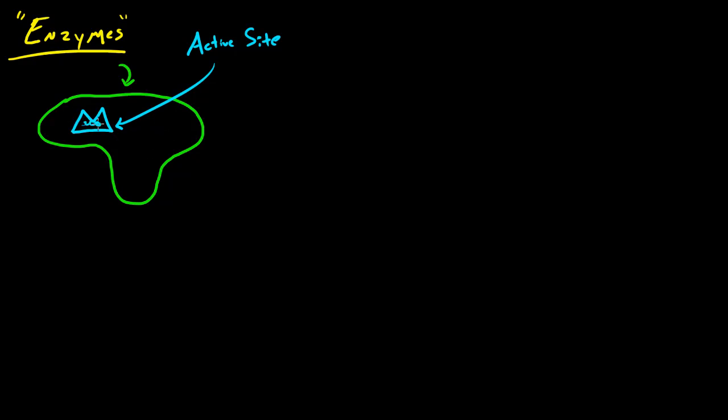Whatever molecule goes right here is going to be the molecule involved in the chemical reaction. The enzyme is responsible for speeding up whatever molecules are reacting in the active site. So say we have a random molecule around here—oh how convenient, it looks like it's gonna fit perfectly in the active site.